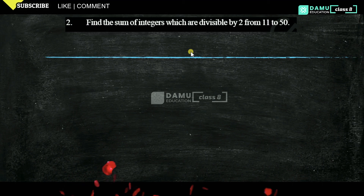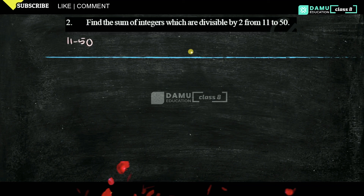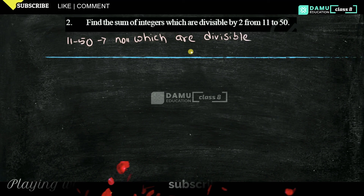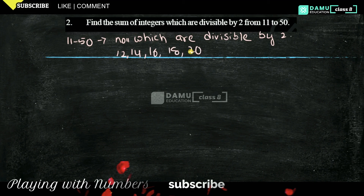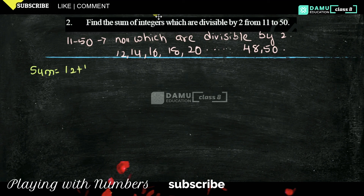Our next question is: find the sum of integers which are divisible by 2 from 11 to 50. The numbers which are divisible by 2 from 11 to 50 are: 12, 14, 16, 18, 20 and so on, 48 and 50. We need to find that sum.